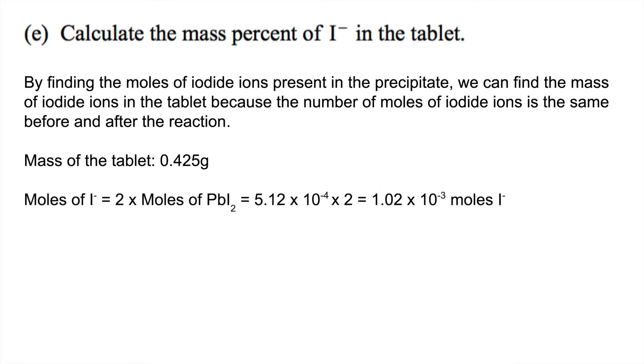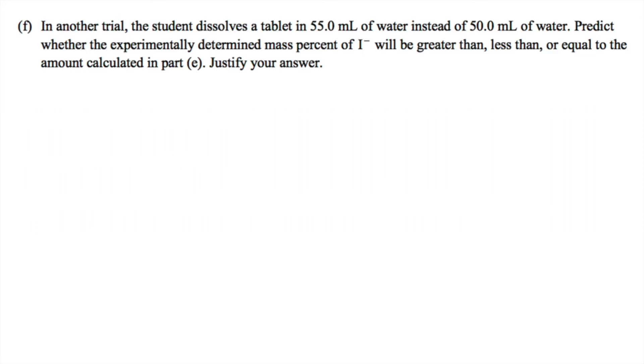The moles of iodide is equal to double the moles of lead-to-iodide because there are two iodide ions for each molecule of lead-to-iodide. We are going to multiply the number of moles of lead-to-iodide by two to get 1.02 times 10 to the negative 3 moles of iodide ions. Each ion is going to have a mass of 126.9 grams per mole. We can find that from the periodic table and we just multiply that by the number of moles to get 0.13 grams of I- in the tablet. So the mass of the tablet, as we said earlier, was 0.425 grams. So if we divide the mass of iodide by the mass of the whole tablet, we get 0.306, which is 30.6%.